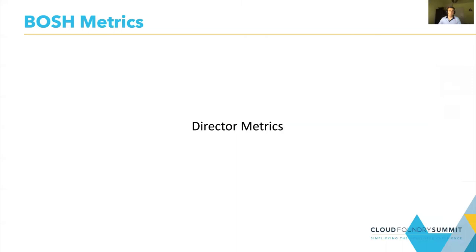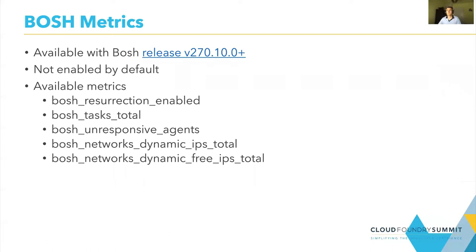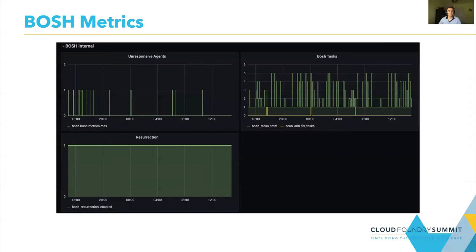Let's look into available director metrics. With BOSH version 217.10, BOSH introduced a metrics server. It's not enabled by default — you can enable it if you want. If it's enabled, you will have metrics about resurrection on and off, the total tasks in the director queue, metrics about unresponsive agents, available dynamic IPs, and total number of dynamic IPs. This is the dashboard we have based on director metrics. For example, resurrection is one metric which is really useful.